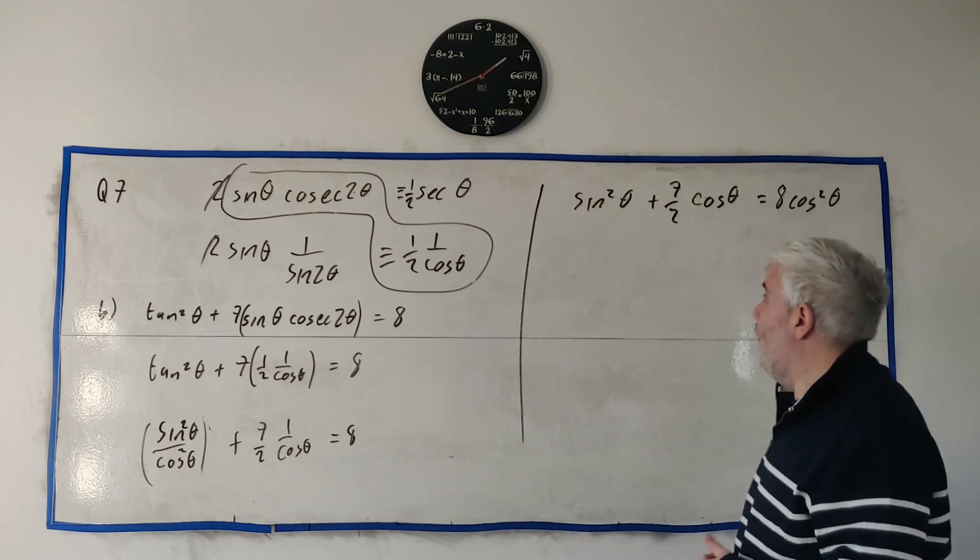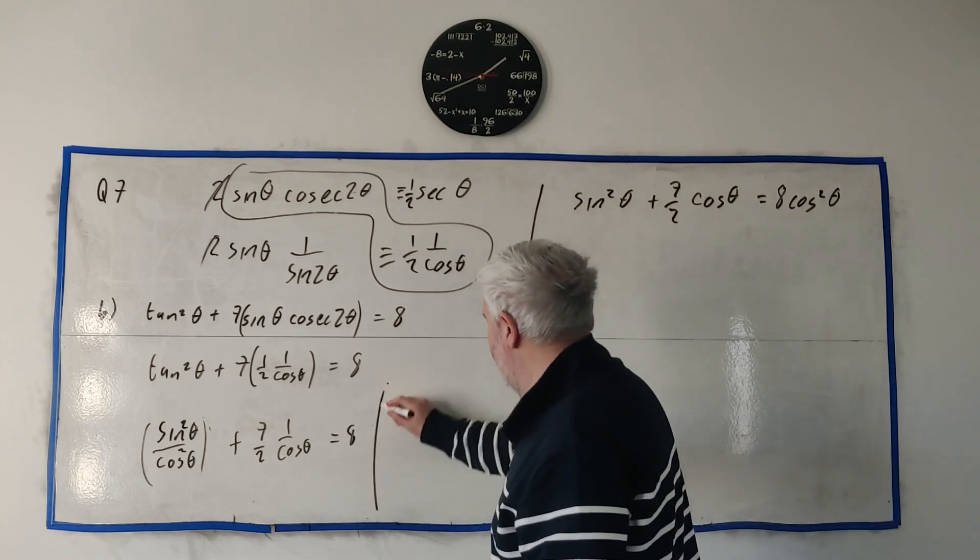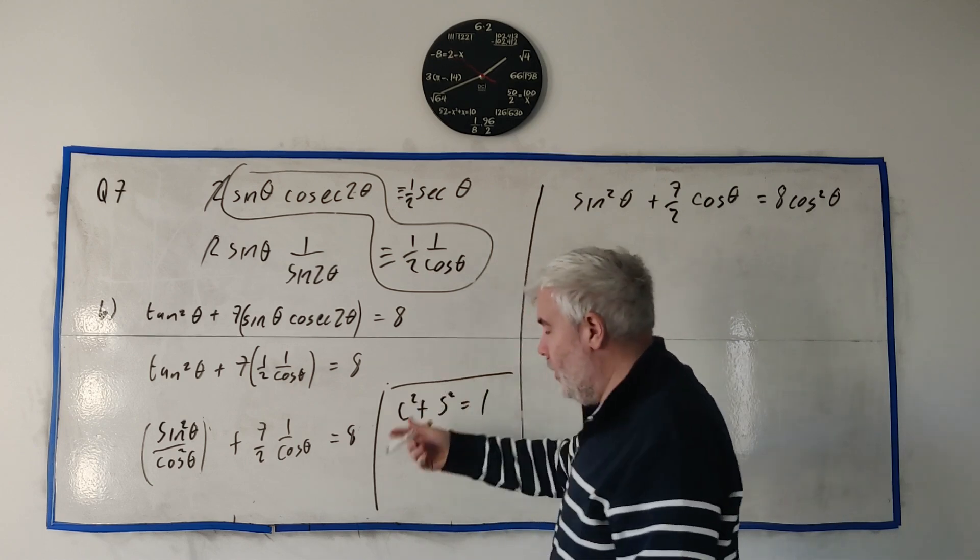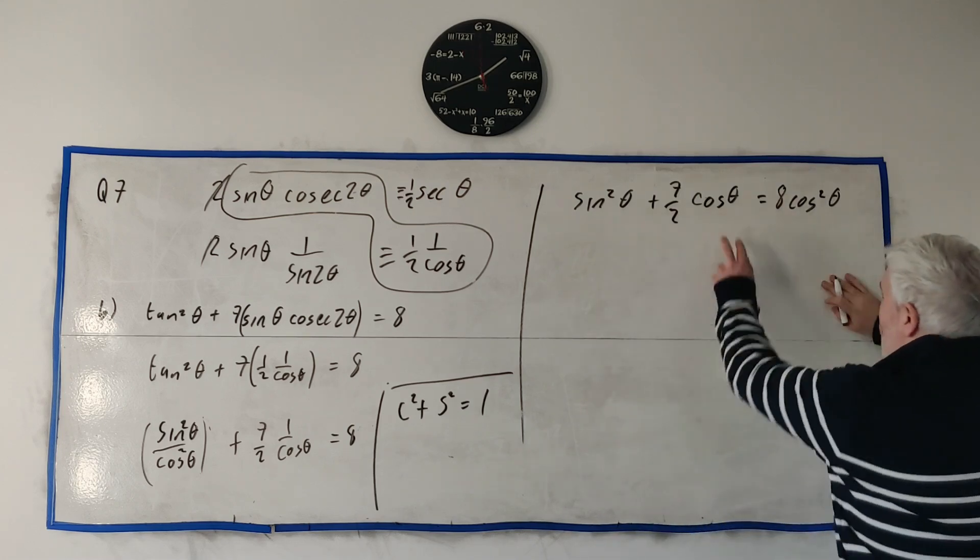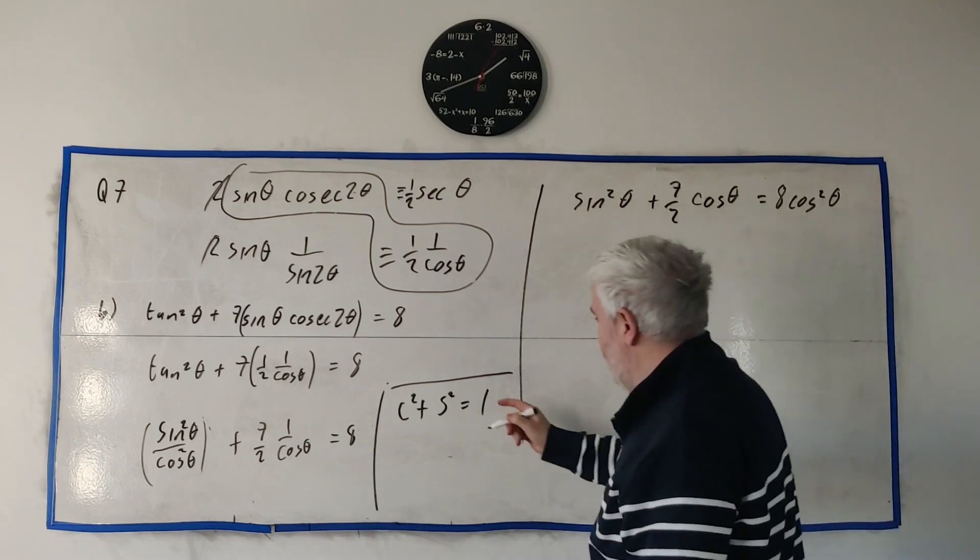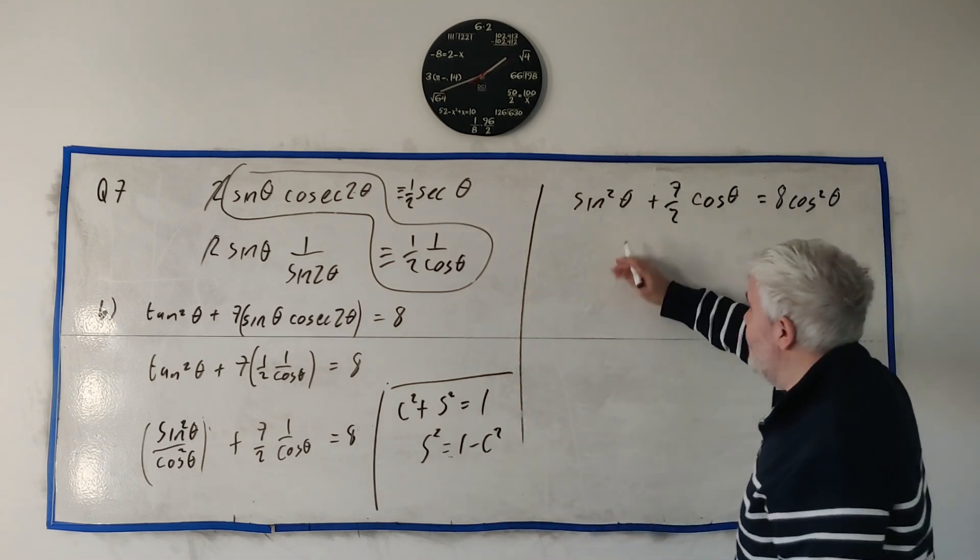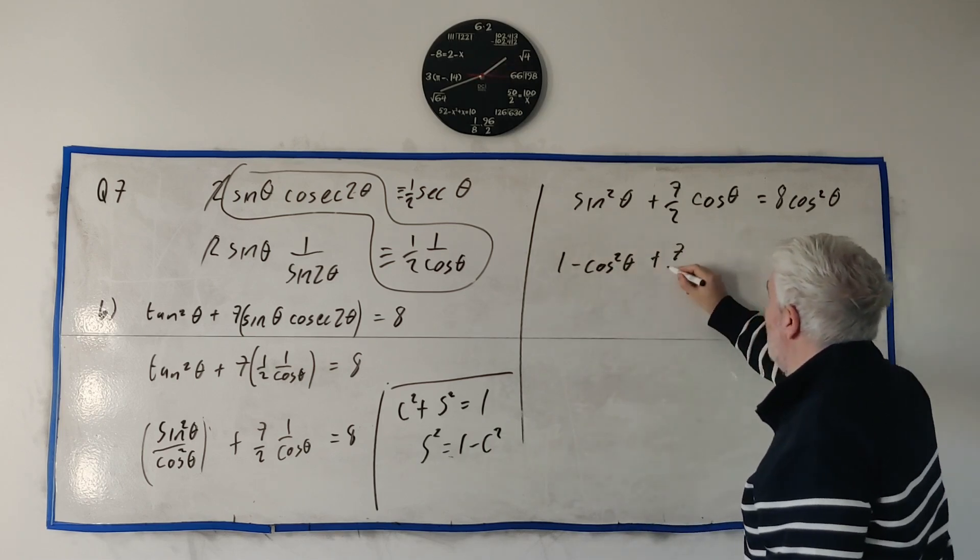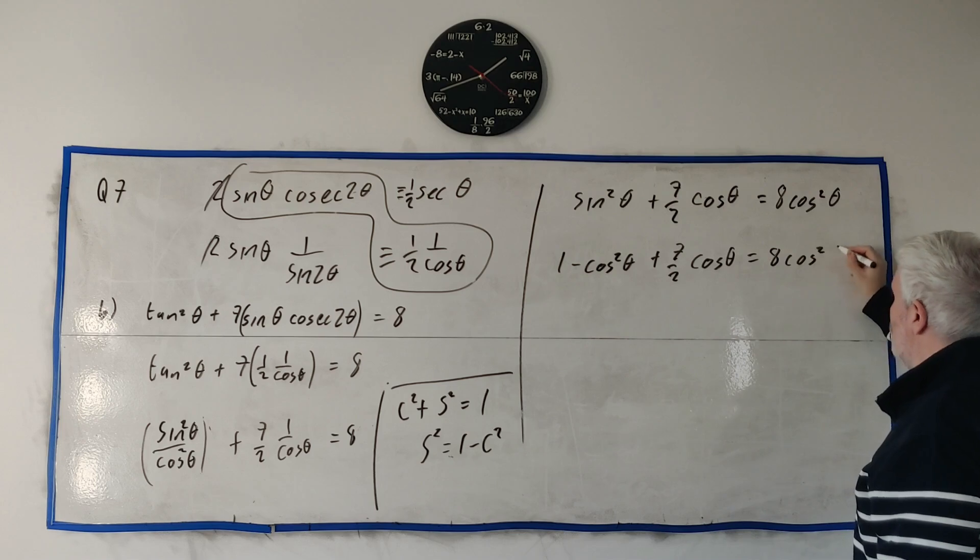This multiplied by cosine squared just leaves sine squared. This multiplied by cosine squared leaves the 7 over 2 and it'll leave 1 cosine on top. And then 8 will get multiplied by cosine squared as well, 8 cosine squared θ. And next thing, whenever you have squares, sine squared or cosine squared, you hopefully are thinking, cosine squared plus sine squared is equal 1.